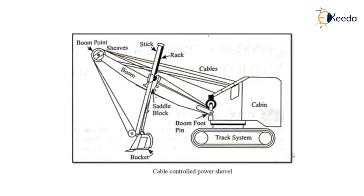Now we will see the basic parts of a cable-controlled power shovel. The parts include a track system, a cabin, cables, bucket, saddle block, boom, boom point, stick, and a rack.